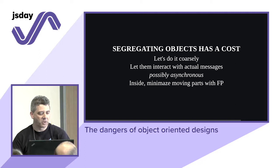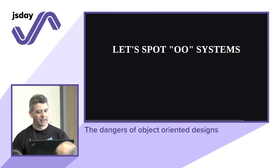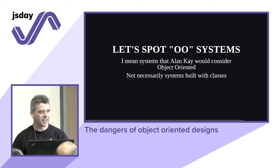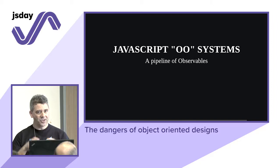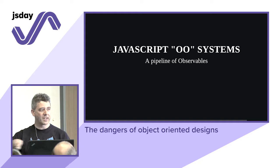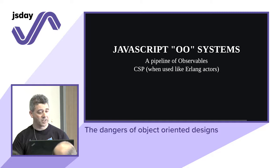Let's spot object-oriented systems that Alan Kay would have considered object-oriented — not necessarily built with classes. In JavaScript: a pipeline of observables. You've been taught this is functional reactive programming, but think about the principles — each step of the pipeline is like an object, possibly stateful like a cache, totally isolated, receiving and giving output. This would be an object-oriented system with proper principles. Also: communicating sequential processes, async/await, channels when used like Erlang actors.